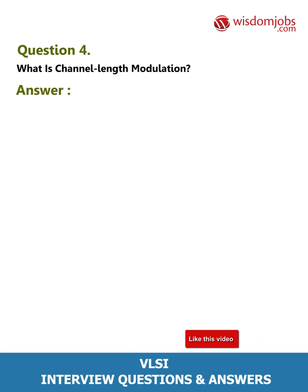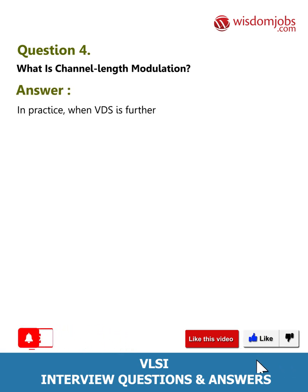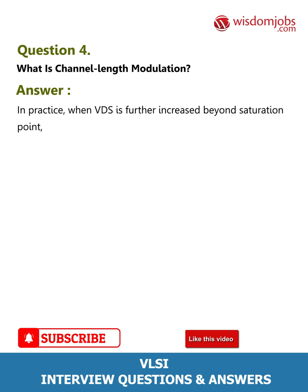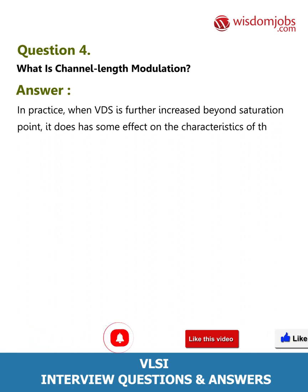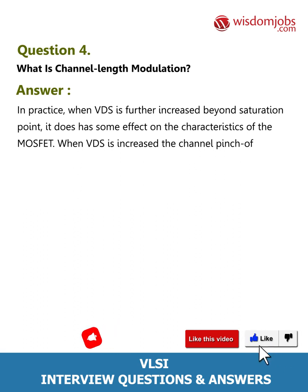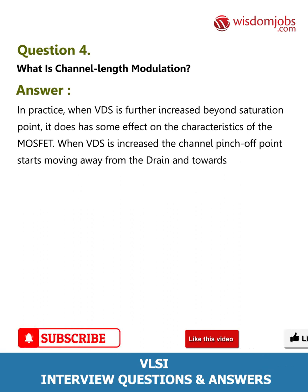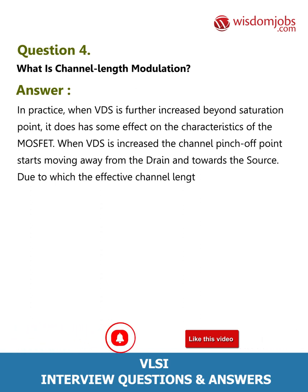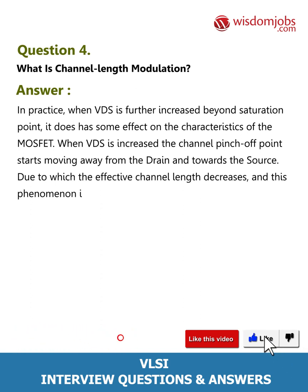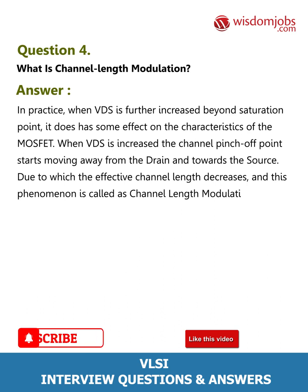Question 4: What is channel length modulation? Answer: In practice, when VDS is further increased beyond the saturation point, it does have some effect on the characteristics of the MOSFET. When VDS is increased, the channel pinch-off point starts moving away from the drain and towards the source, due to which the effective channel length decreases. This phenomenon is called channel length modulation.